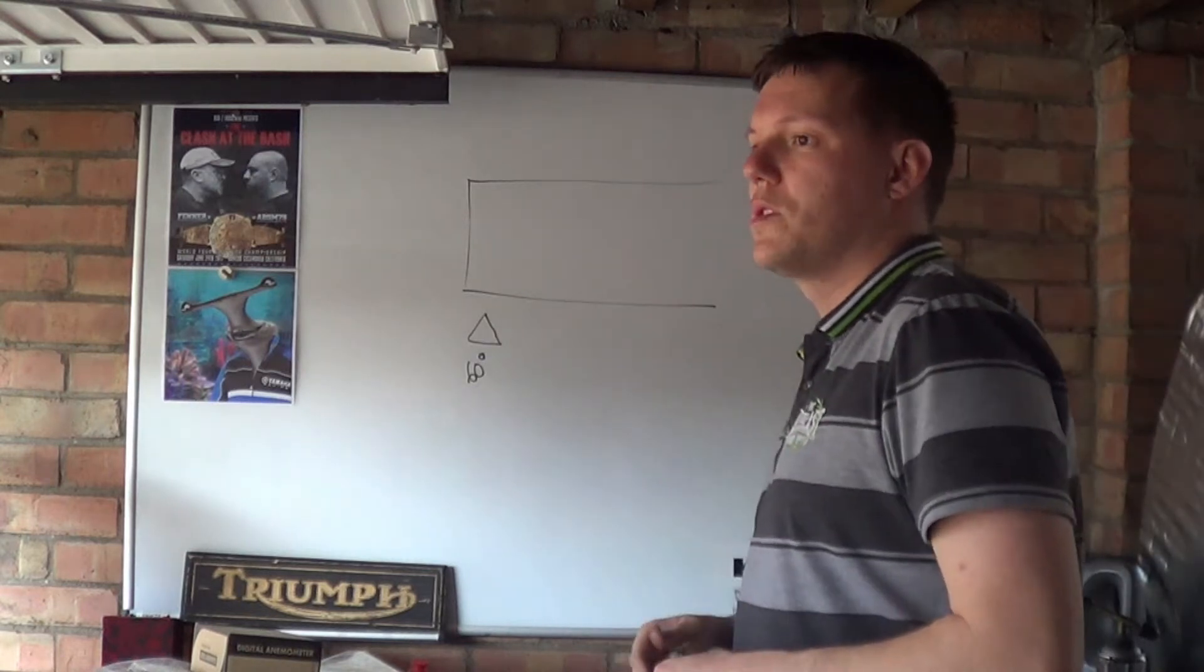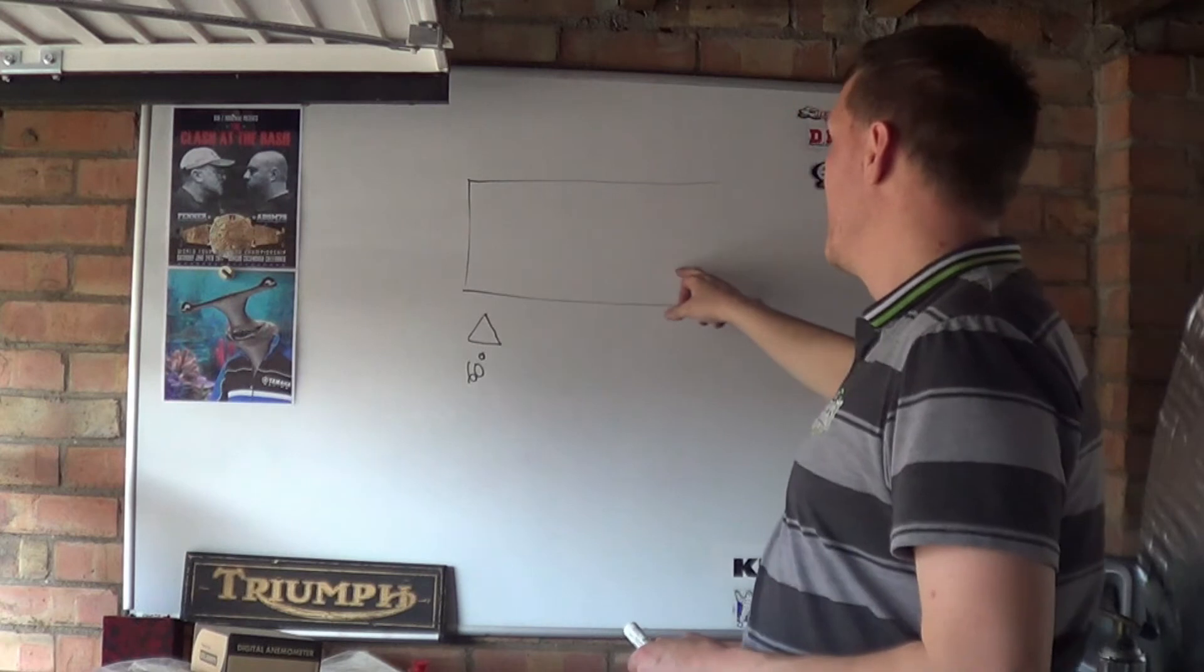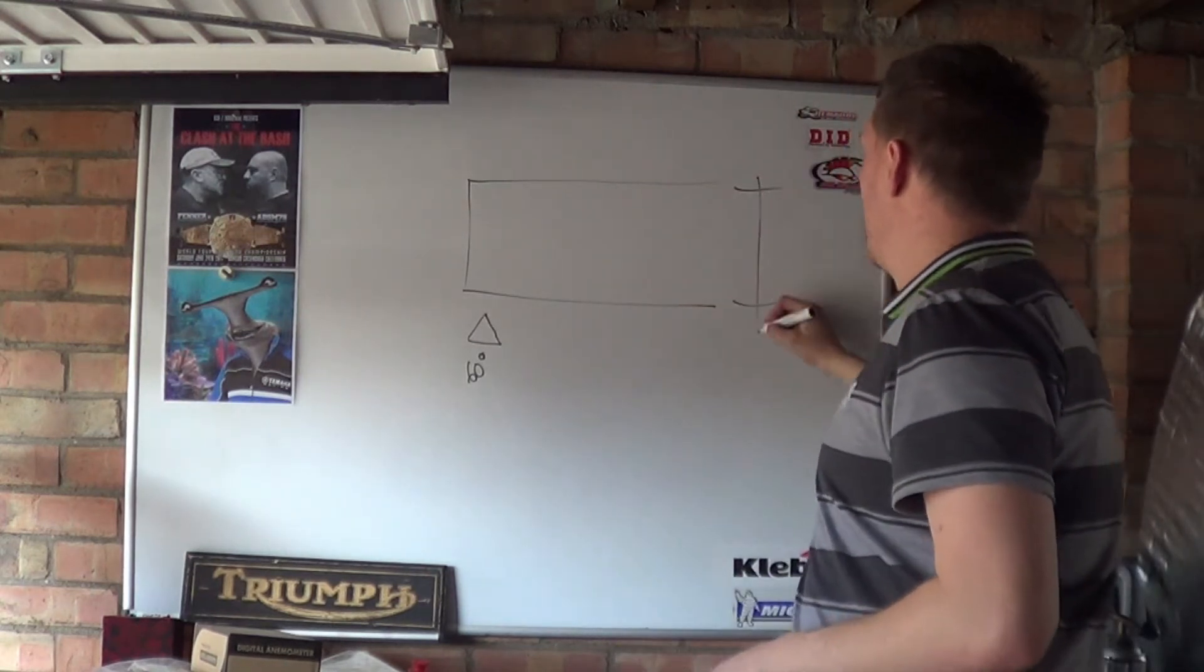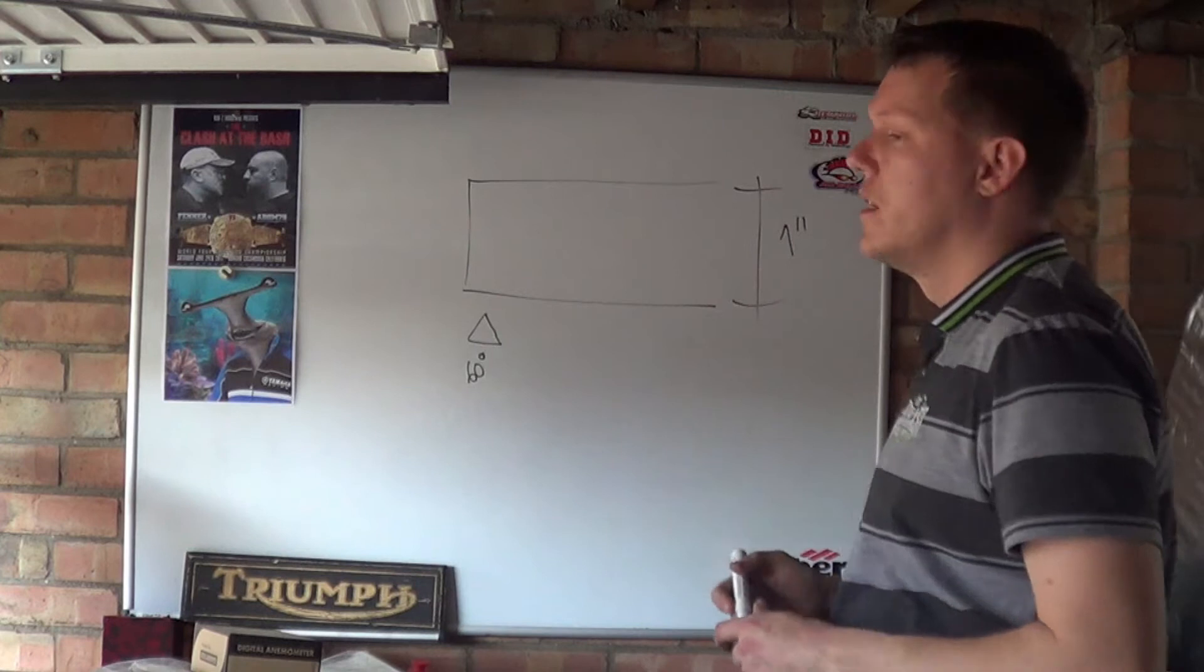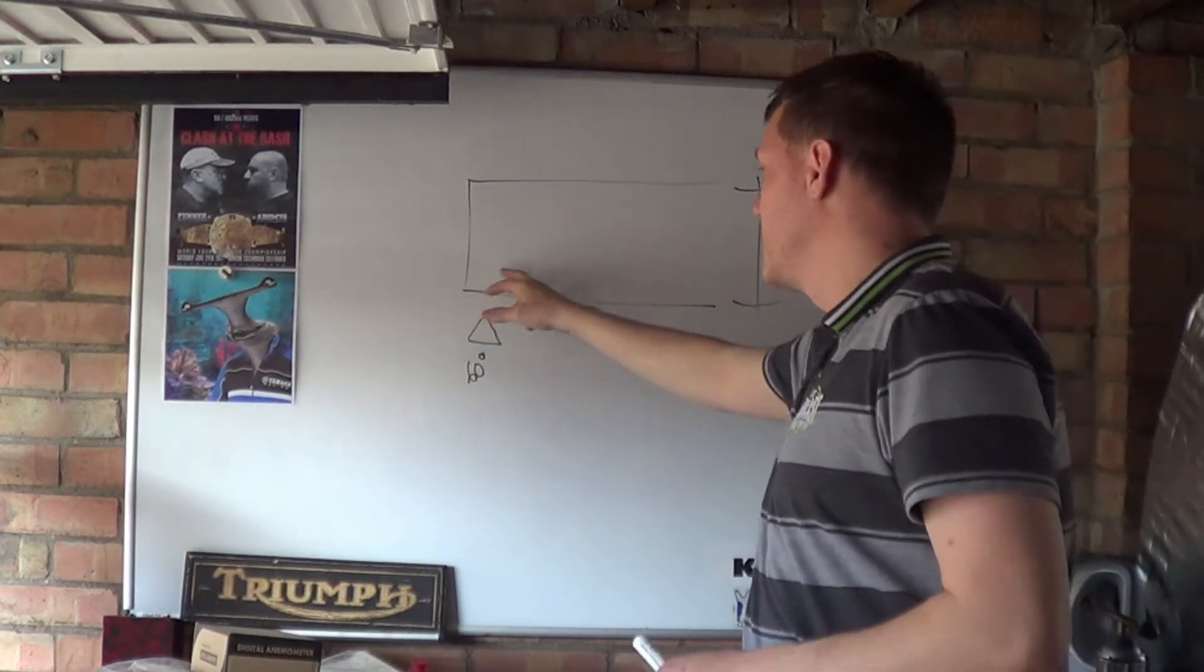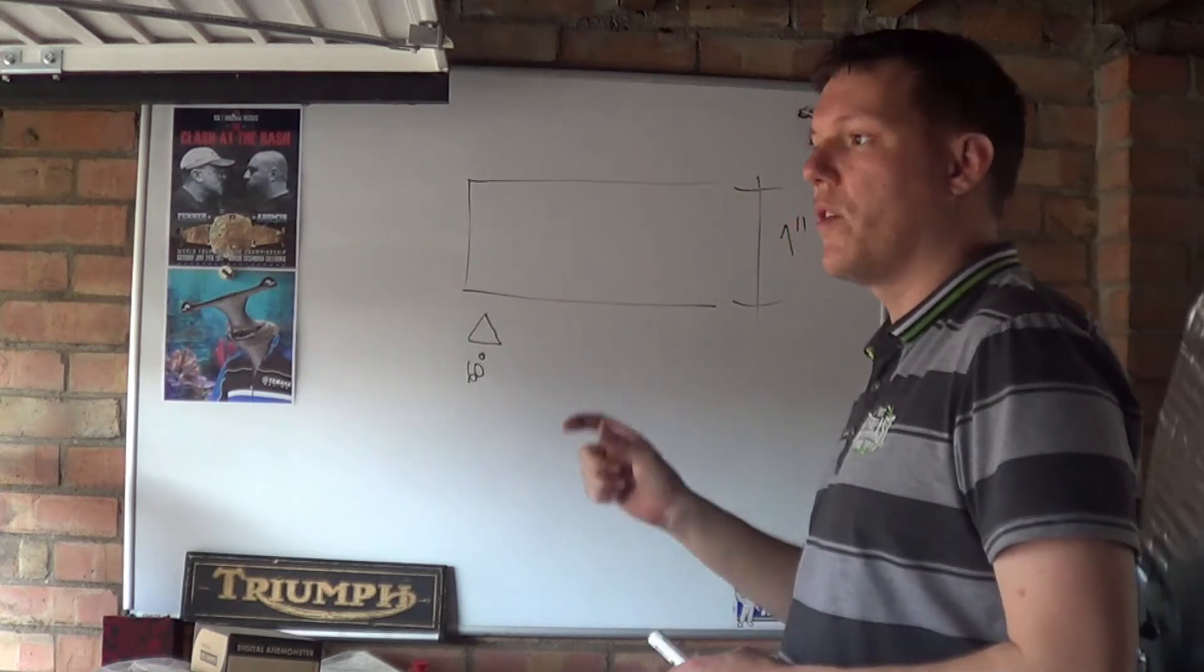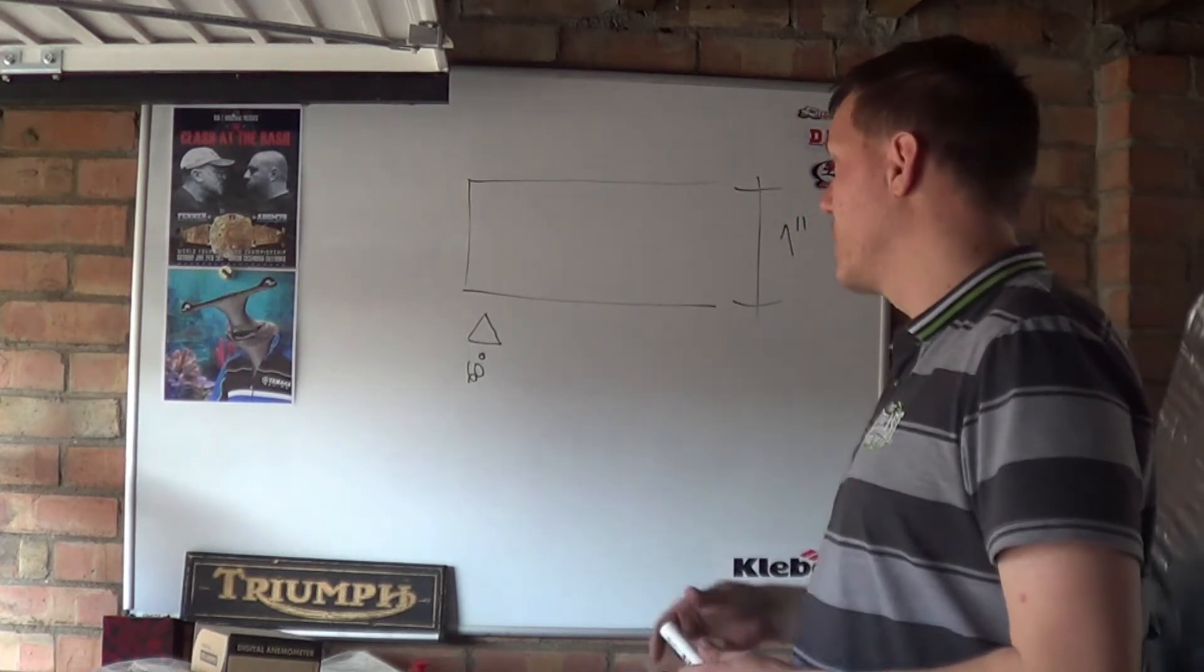Now I will do some videos about threads and the different uses but for now we're just sticking with V threads. And basically what you want is if you want a one inch bolt you will have a one inch OD and you will turn that down to whatever thread per inch or pitch in millimeters that you require.